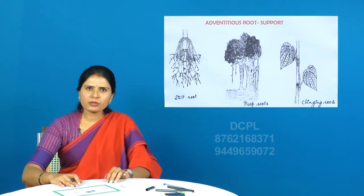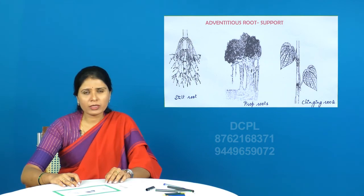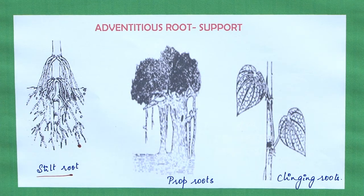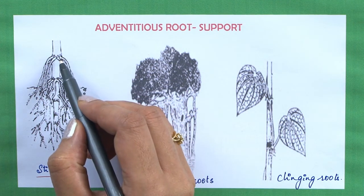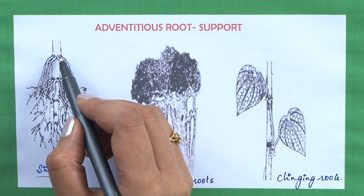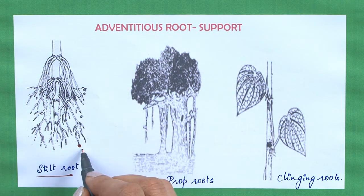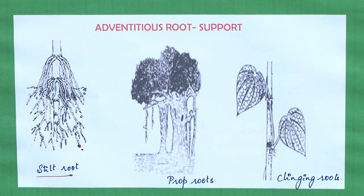Apart from storage, adventitious roots are also modified for the purpose of mechanical support. There are three different types of adventitious roots modified for mechanical support. The first is the stilt root, usually seen in sugarcane, where apart from normal roots, stilt roots develop from the upper nodal regions of the stem. They droop down, fix to the soil, and provide mechanical support to the plant body.